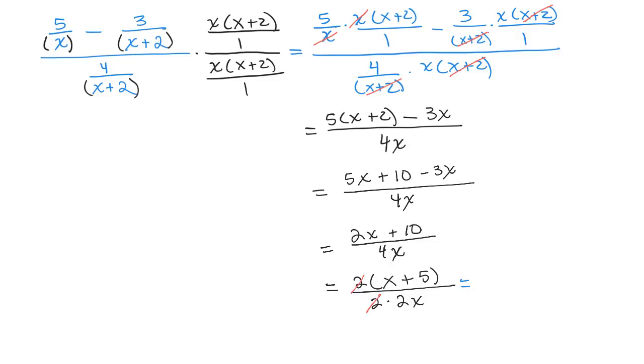What I'm left with is in the numerator, x plus 5. Remember, that's a quantity. You can only cancel out with another x plus 5, so don't try to cancel out the x's here at the end. I have x plus 5 over 2x.